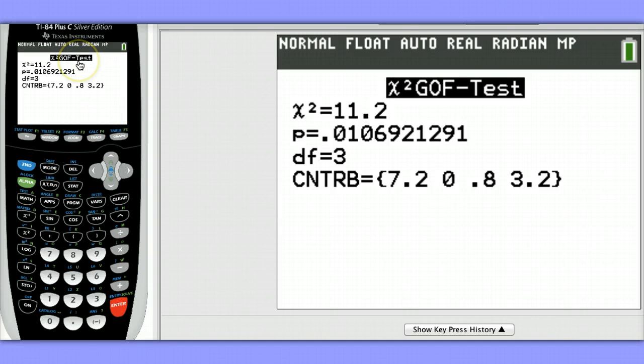We see our chi-squared test statistic is 11.2, and our p-value is .01, with our degrees of freedom being 3.